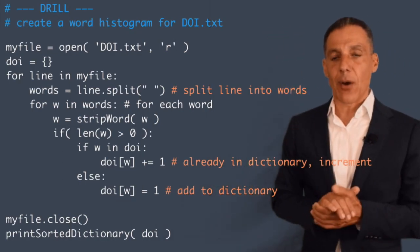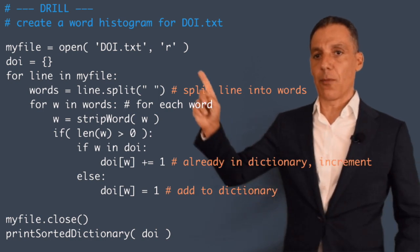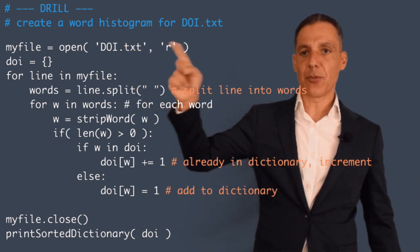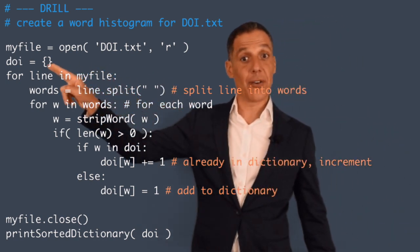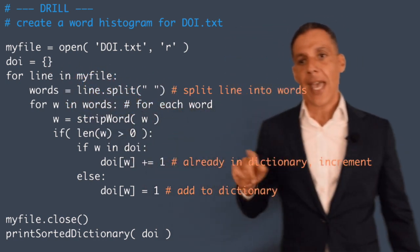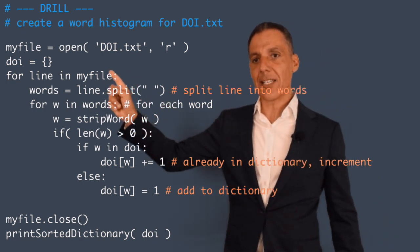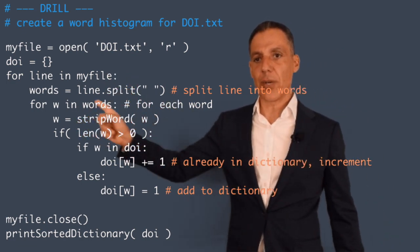All right, I hope you got that. Let me go ahead and show you my solution. So first things first, I'm going to open the file doi.txt with read only. I'm going to initialize my dictionary with curly bracket curly bracket, and notice here I have two nested for loops: for line in myFile, for W in words.